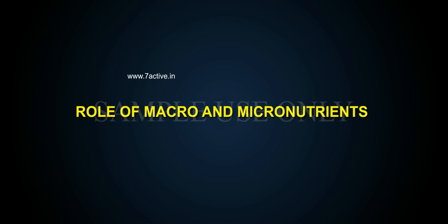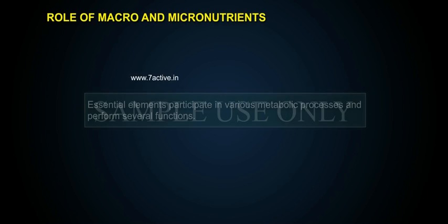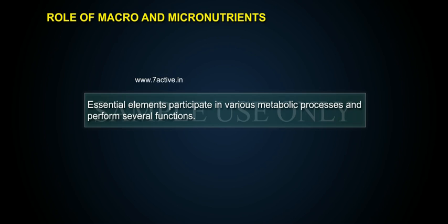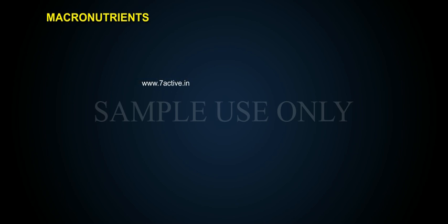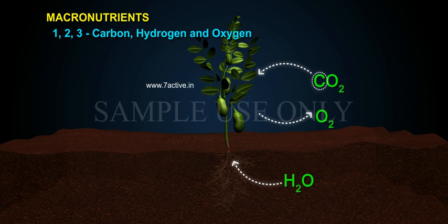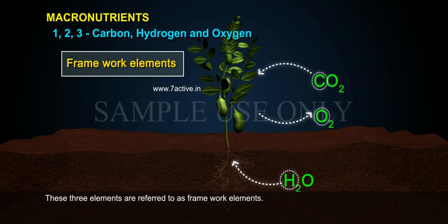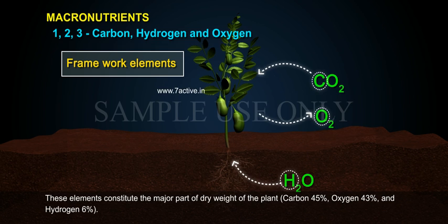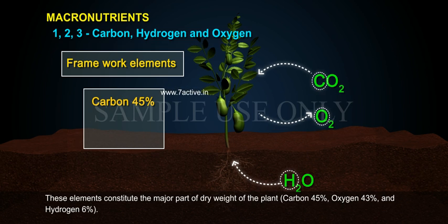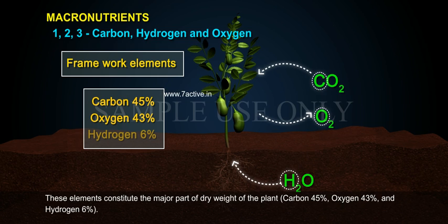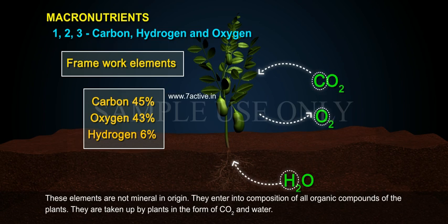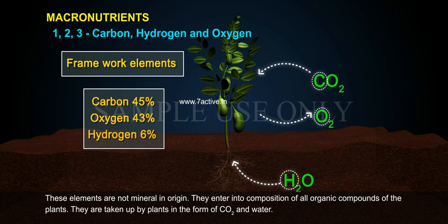Essential elements participate in various metabolic processes and perform several functions. Macronutrients 1, 2, 3 — Carbon, Hydrogen, and Oxygen — are referred to as framework elements. These elements constitute the major part of the dry weight of the plant: Carbon 45%, Oxygen 43%, and Hydrogen 6%. These elements are not mineral in origin; they enter into the composition of all organic compounds of the plants and are taken up by plants in the form of CO2 and water.